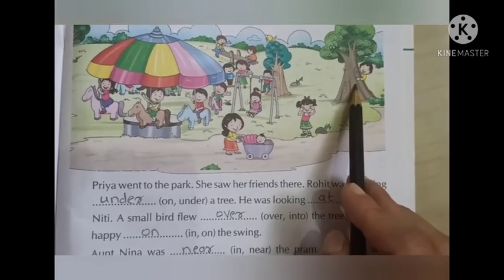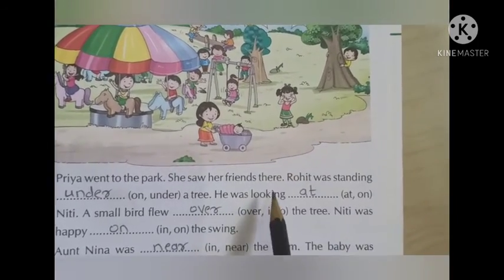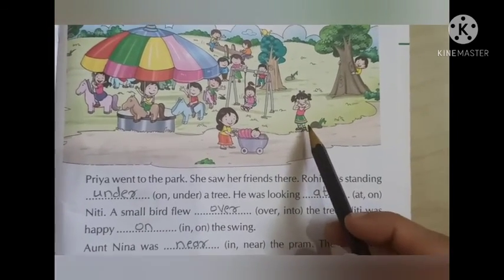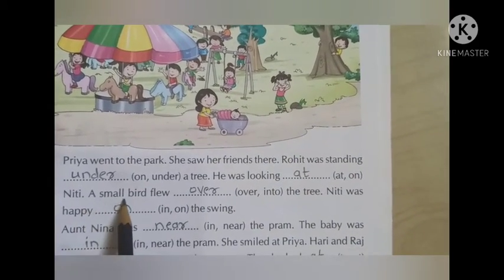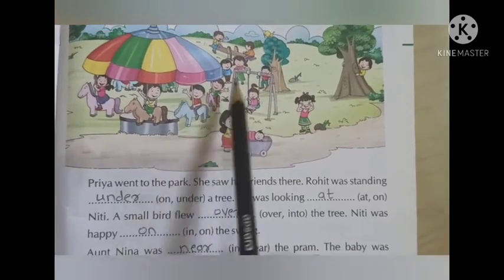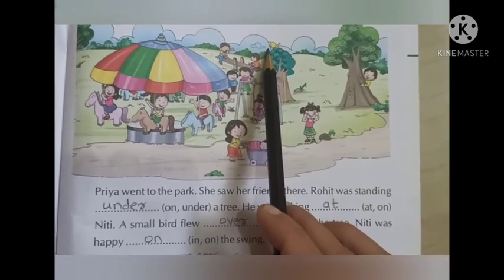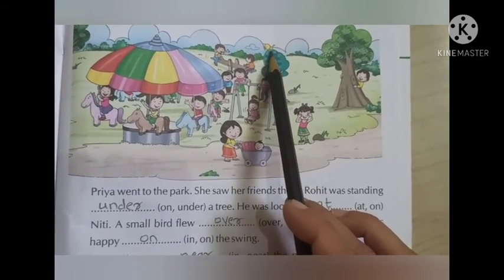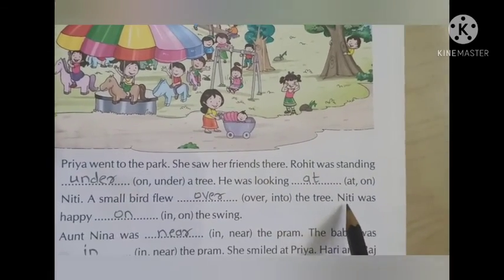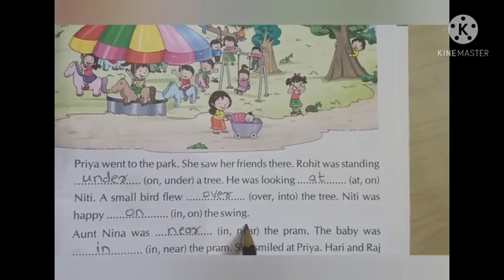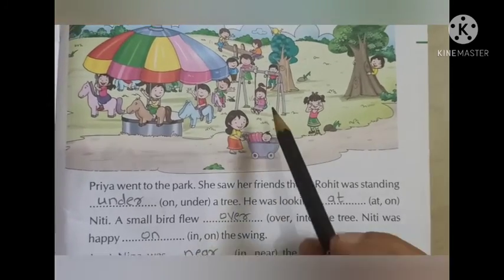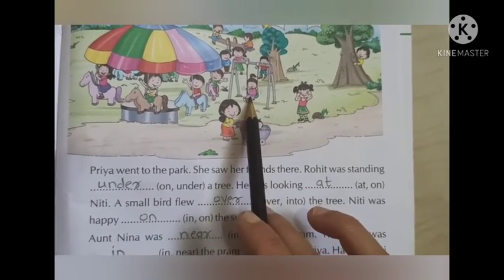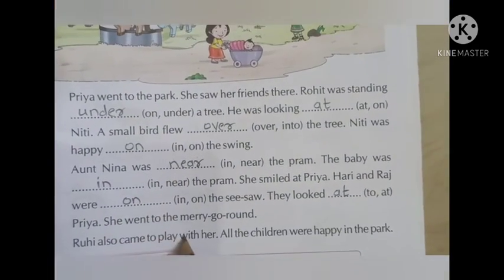Priya went to the park and saw her friends there. Rohit was standing dash a tree — is he standing on or under the tree? He is standing under the tree. Next, he was looking dash Nita — at or on? He was looking at Nita. A small bird flew dash the tree — it flew over the tree. Niti was happy dash the swing — in the swing or on the swing? We cannot go inside the swing, so it is on the swing. Similarly, you have to solve the remaining blanks.